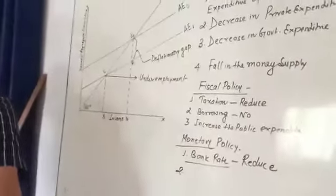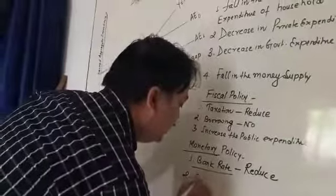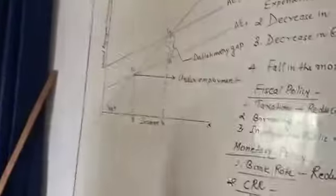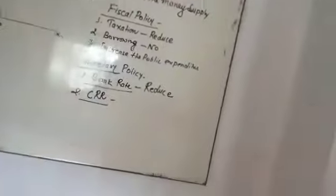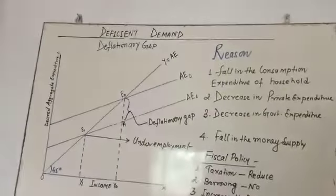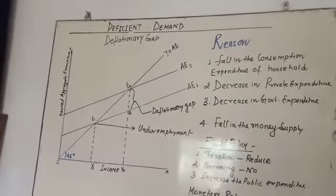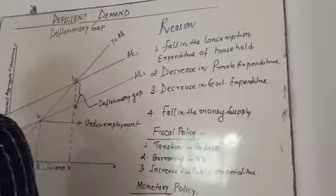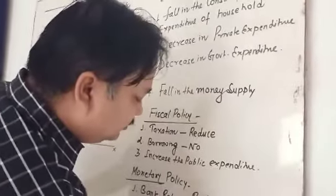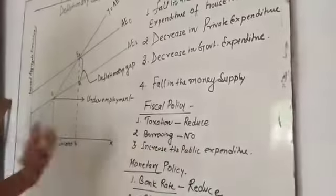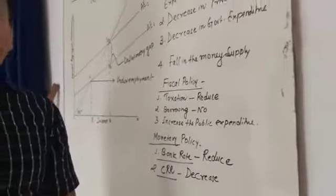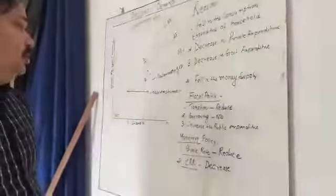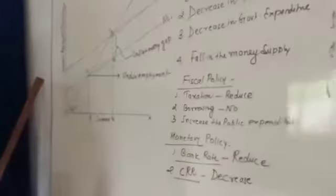Second is CRR. The central bank is not going to increase the CRR. If CRR increases, commercial banks are not able to meet the demand. So this time, CRR is going to decrease — it means all commercial banks do not need to keep cash reserves higher than before. So these are the monetary policy measures.